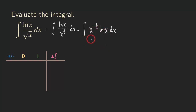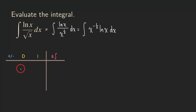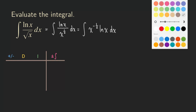Now, which one do we choose for the differentiation column and which for the integration column? Because we can differentiate ln(x) easily, we choose that for the differentiation column. We also need to make sure we can integrate x to the negative 1/2 — and we can. So let's start filling in the table.